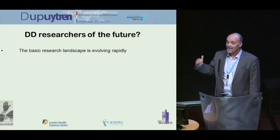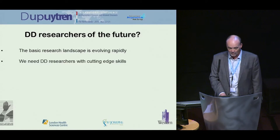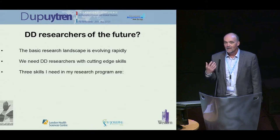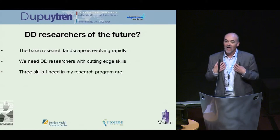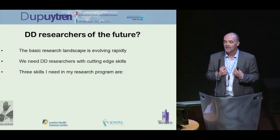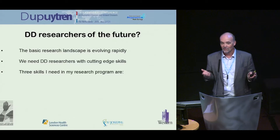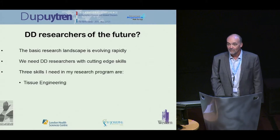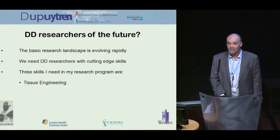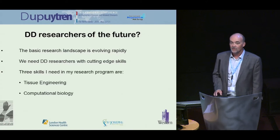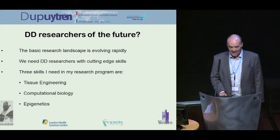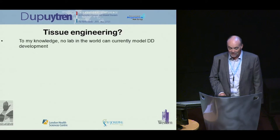We need to start pushing the envelope, catching up with colleagues in cancer and other research areas. We need Dupuytren's disease researchers with cutting-edge skills. In my opinion, there are three kinds of people I need in my lab: those with skills in tissue engineering, computational biology, and epigenetics. Tissue engineering is a big way forward — we need to generate reproducible cords in the lab that are reproducibly testable.